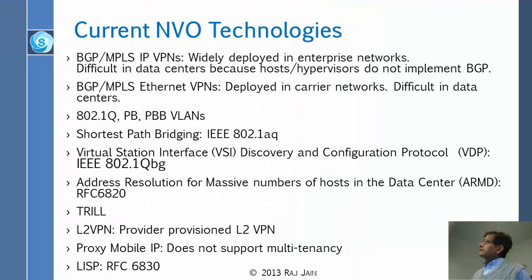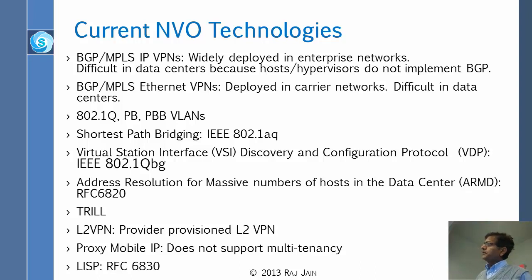Right now, these technologies already exist even before NVO3 was formed. BGP and MPLS virtual private networks are used, BGP and MPLS Ethernet VPNs are used, VLANs, PBB, shortest path bridging — all are there. VLAN Station Identifier, Discovery and Configuration Protocol (VDP) from QBG is there. And ARMD — Address Resolution for Massive numbers of hosts in Data centers — is another protocol we haven't discussed.